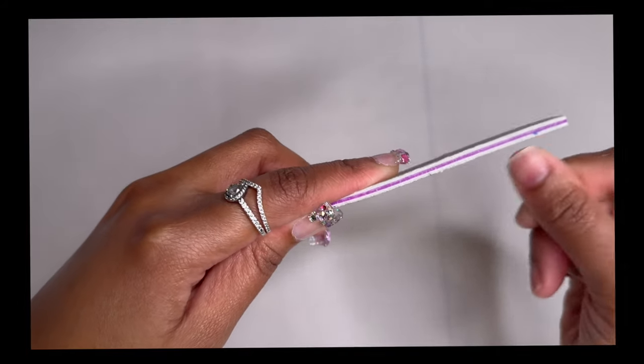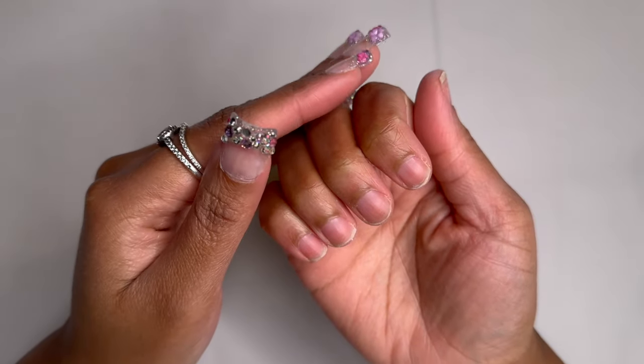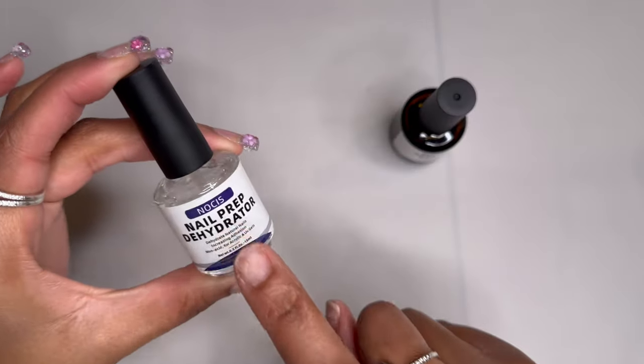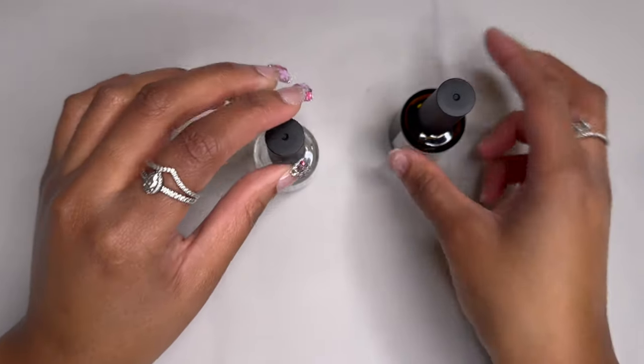We're going to start with nail prep and I'm just filing my nails all even. Then I'm going to lightly file the nail surface to roughen up the cuticle for maximum adhesion.